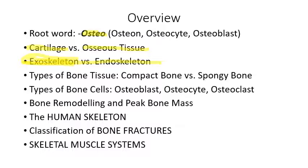There are two broad categories of bone tissue: compact bone and spongy bone. Compact bone is made of units called osteons, and spongy bone is made of different, not quite as strong units called trabeculae. There are three types of bone cells: an osteocyte is the general term for a bone cell. An osteoblast is an osteocyte whose job is to build bone, and an osteoclast is an osteocyte whose job is to take bones apart.